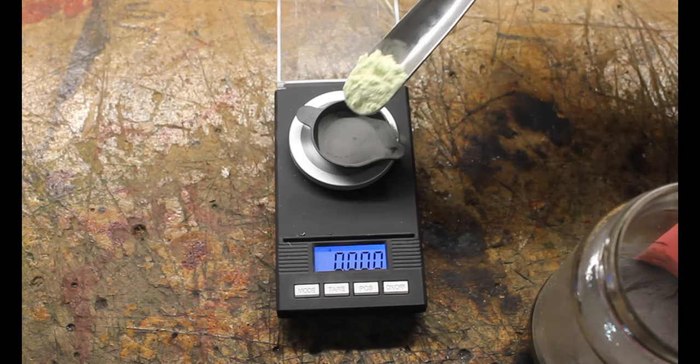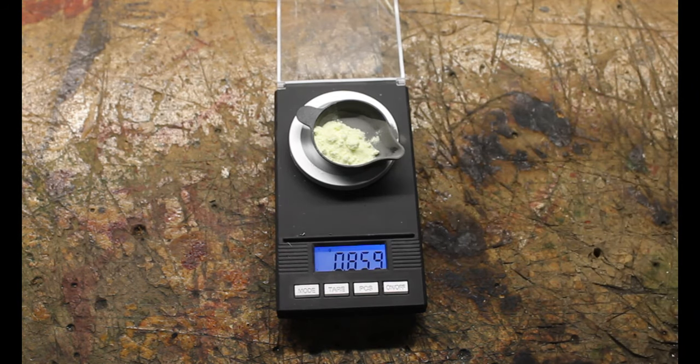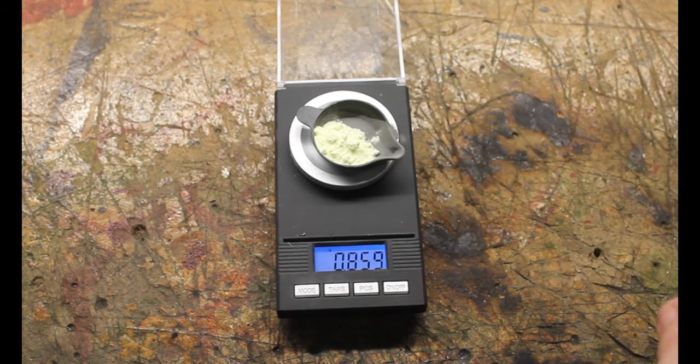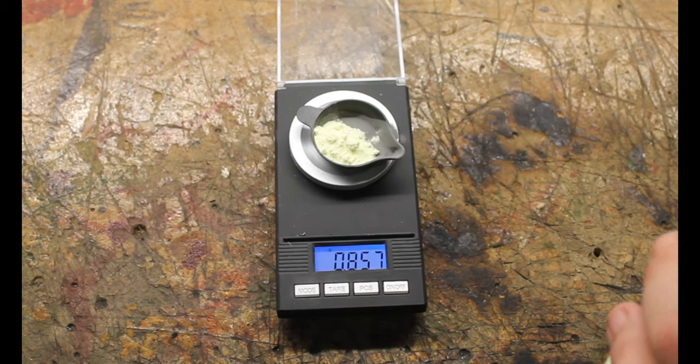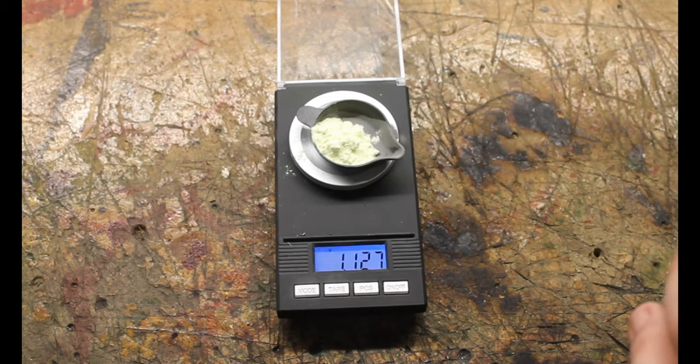We are then going to measure out 5 grams of sulfur powder. Now due to sulfur being so much less dense than iron, this is once again having to be done in two separate measurements, each of about 2.5 grams.